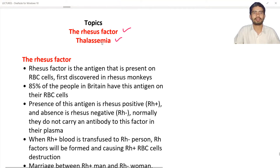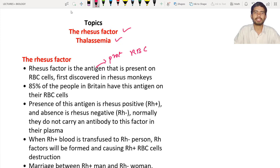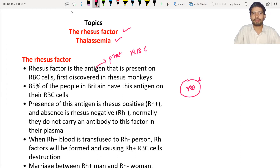What is meant by Rhesus factor? The Rhesus factor is a protein, or you can call it an antigen, that is present on the RBC. If the protein is present on the RBC, that is known as the Rhesus factor. You can see this RBC has some kind of antigen — this antigen is known as the Rhesus factor. People who have this antigen on the RBC are known as Rh positive.